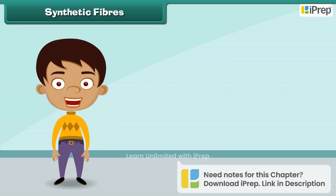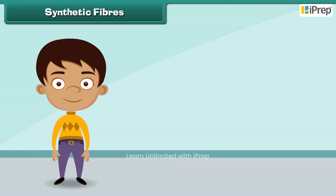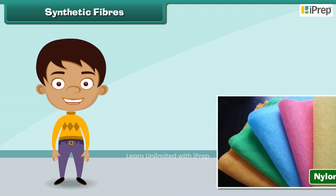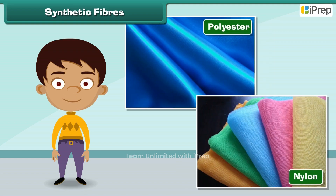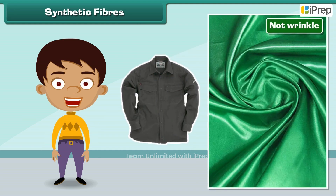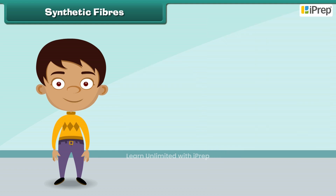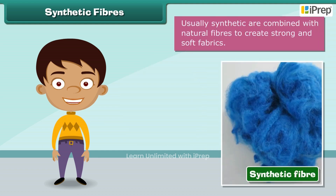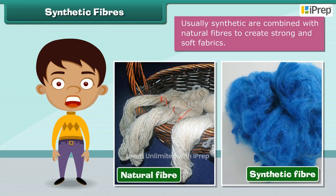Synthetic fibers are man-made. Nylon, polyester, etc. are examples of synthetic fibers. Fabric made from synthetic fibers is cheap, dries easily and does not wrinkle. Usually, synthetic fibers are combined with natural fibers to create strong and soft fabrics.